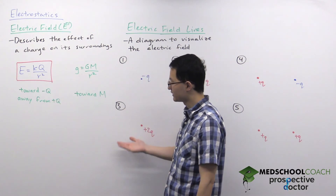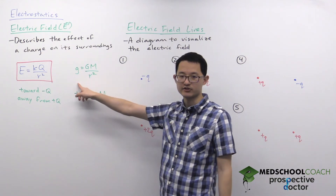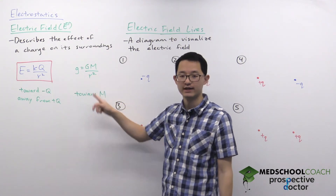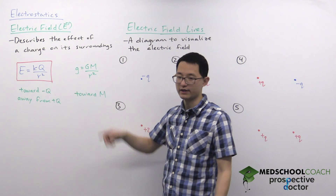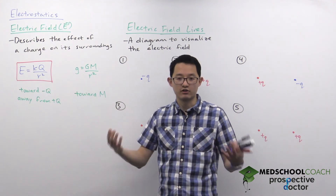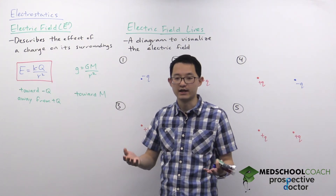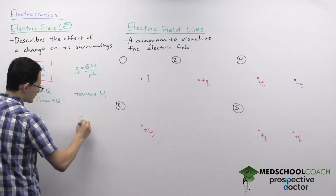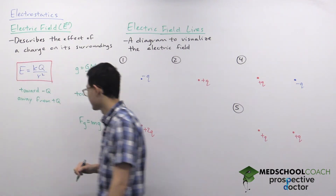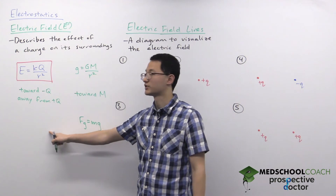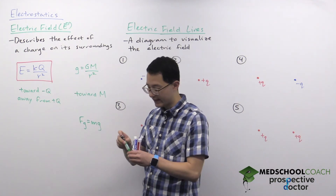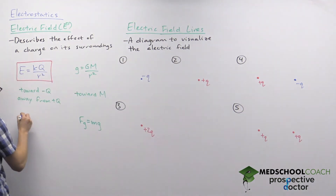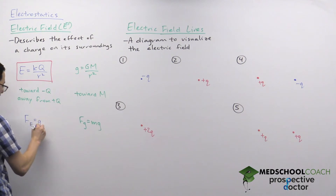In terms of the gravitational field, we don't often use the full equation in mechanics. We usually just use 10 meters per second squared, because the mass and radius of the earth are such large values that they don't change for us on earth. So we use the simplified version: F of g equals mg. We also have a version of this for the electric force: if you know the value of the electric field, the electric force equals QE.